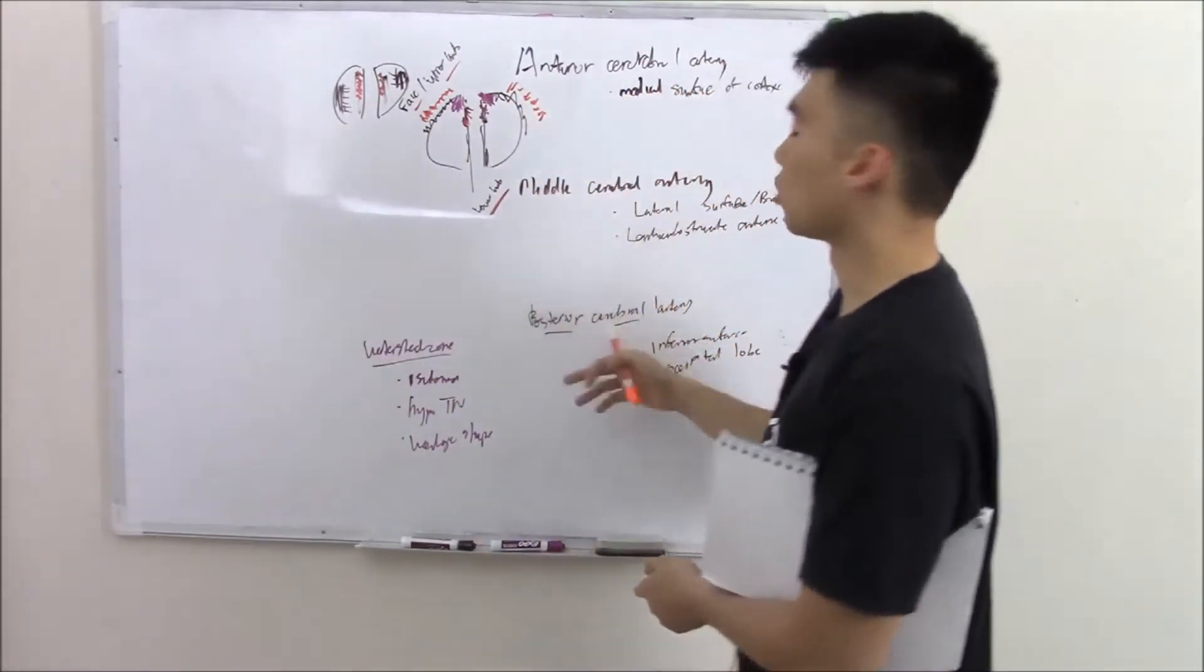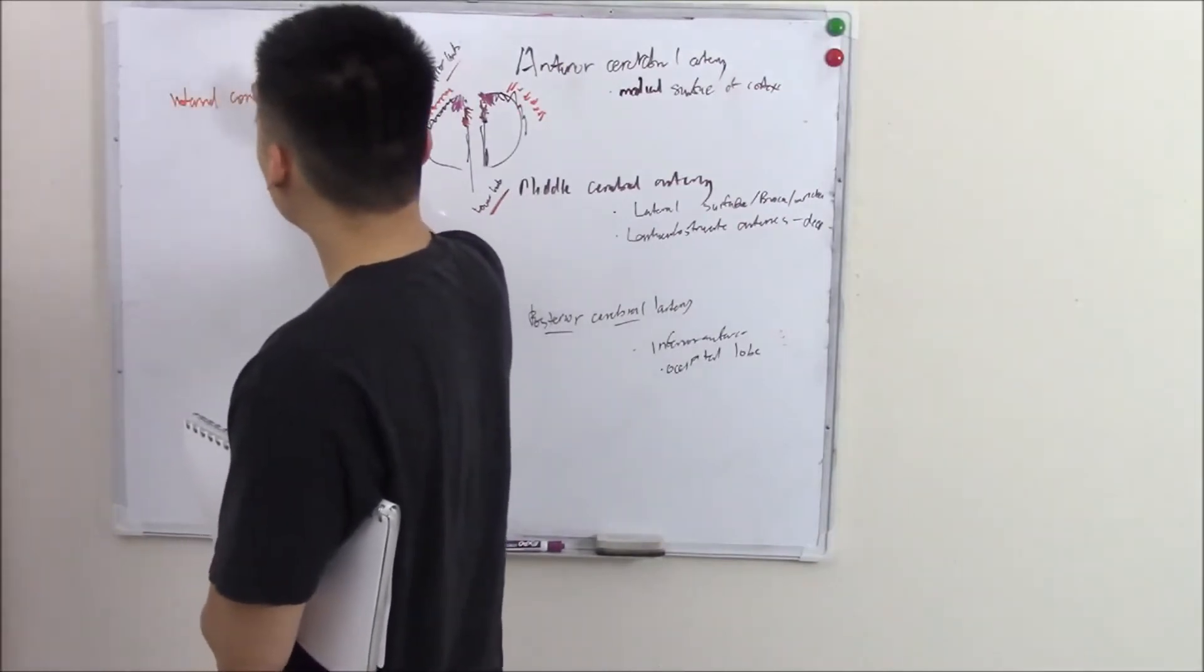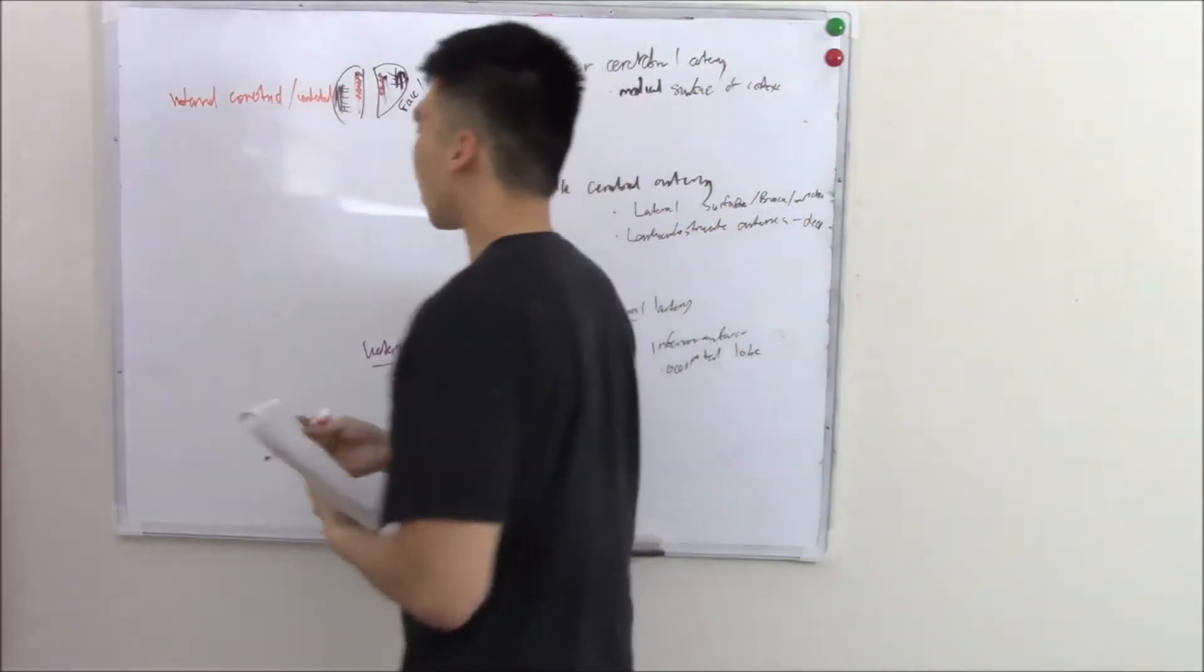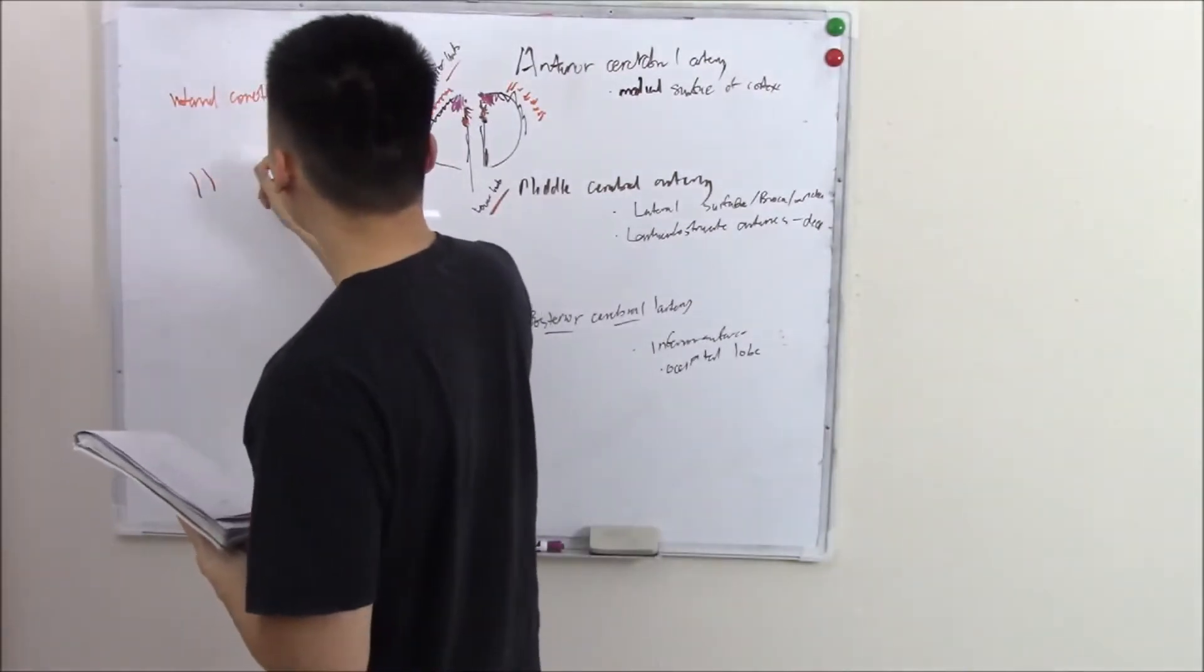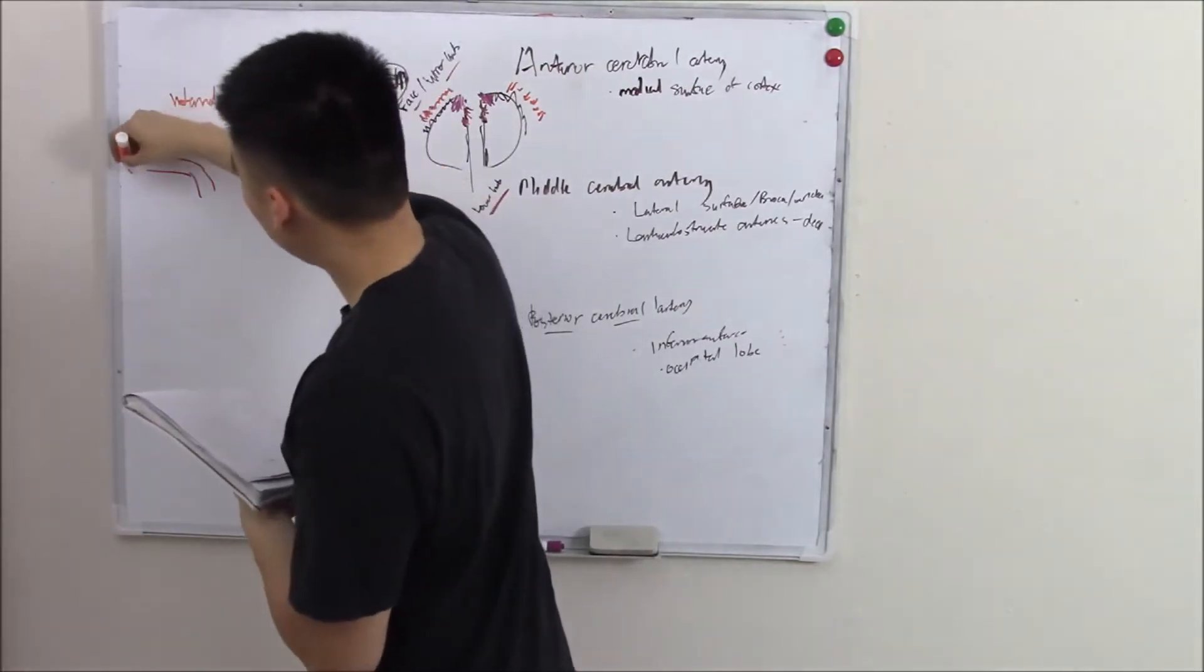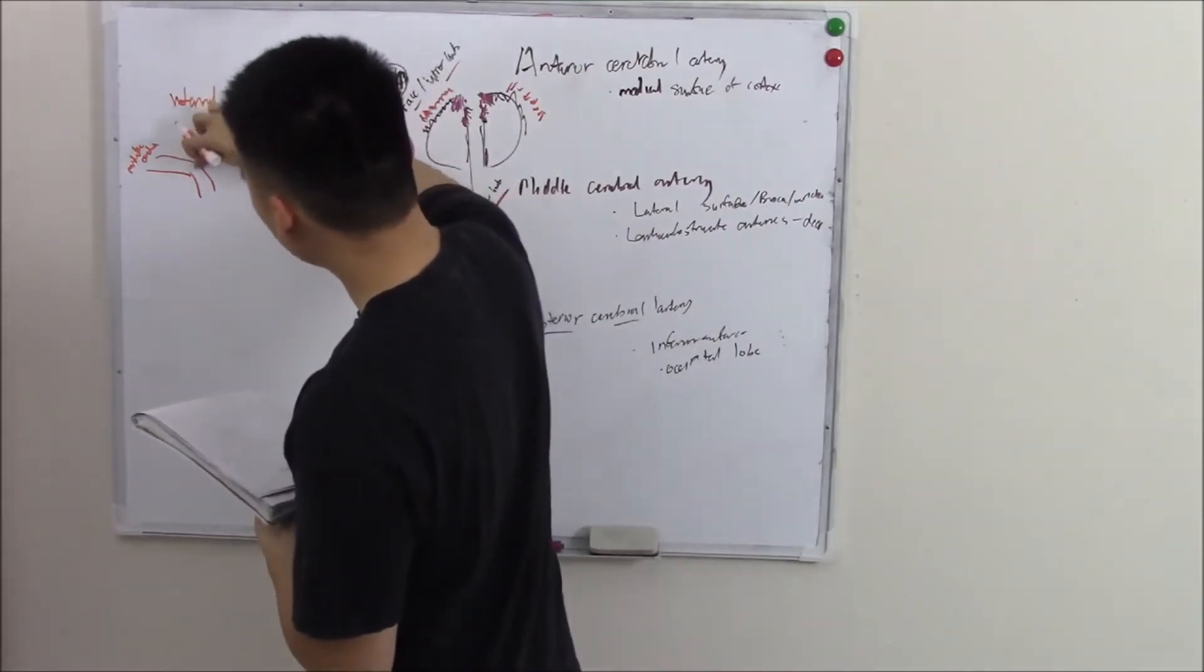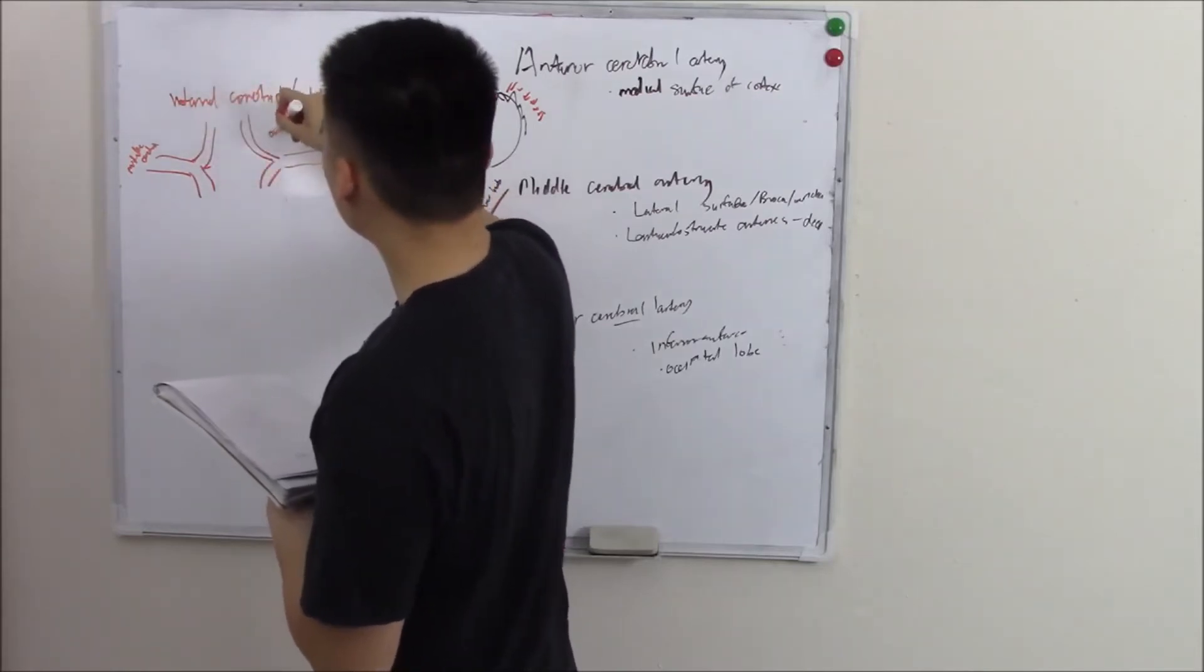So those are your three arteries. Now, where do these three arteries come from? They come from your internal carotids, internal carotids and your vertebral arteries. Your vertebral arteries are located in your vertebrae. That's why they call it vertebral arteries. So internal carotids and your vertebral arteries. Your internal carotids will go up from your neck. That's where they're located. And meet at the base of your skull. And from the base of your skull, it'll branch off into your middle cerebral arteries. Middle cerebral arteries. And I'll also branch off into your anterior.